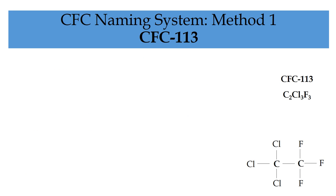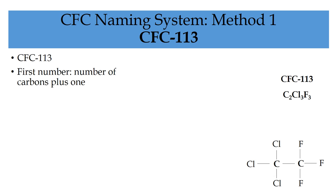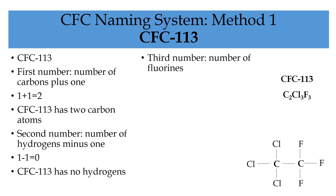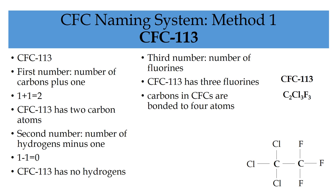The third example is CFC-113, and this doesn't need a zero added, as it already has three numbers. The first number is the number of carbon atoms plus one, so CFC-113 has two carbon atoms. The second number is the number of hydrogen atoms minus one, so CFC-113 has no hydrogen atoms. The third number is the number of fluorine atoms, so CFC-113 has three fluorine atoms. Working out the number of chlorines is slightly more complicated because there is more than one carbon. Each carbon has four available bonds, however one bond for each carbon is used to bond it to the other carbon. So there are actually six available bonds, and because there are three fluorines, there must also be three chlorines in CFC-113.